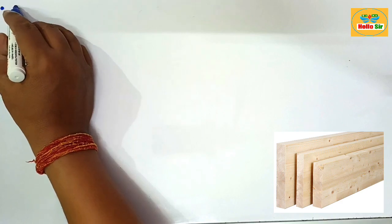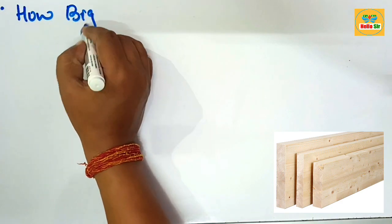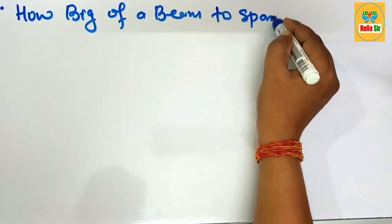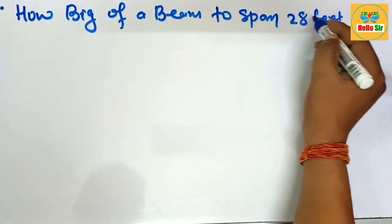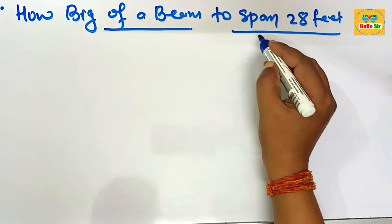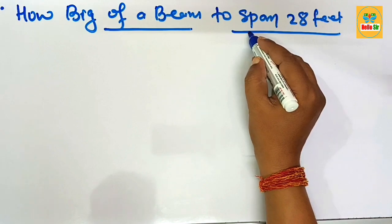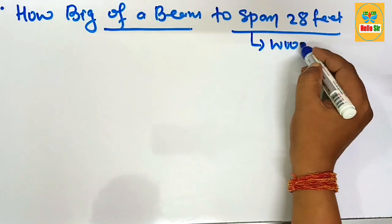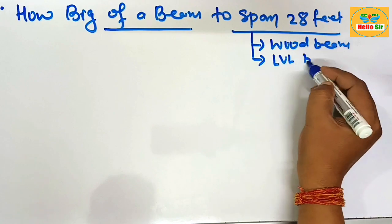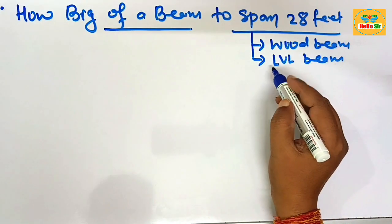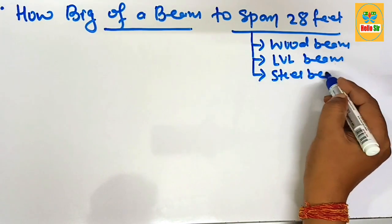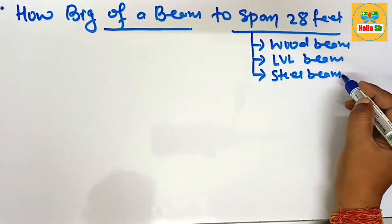Hi guys, today in this video you will learn how big of a beam you need to span a 28-foot distance. You have to figure out the accurate beam size required to span 28 feet. There are several materials used for beam structure: wood beam, LVL beam (laminated veneer lumber), and steel beam — and we'll cover what size is required for each to span 28 feet.